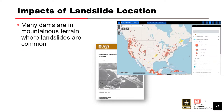Here are some of the landslides and potential areas on the right. Many dams are in mountainous areas where landslides are common. This doesn't include some of our Alaska sites, which also have a lot of landslide classifications.